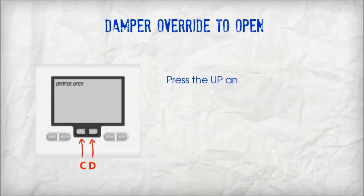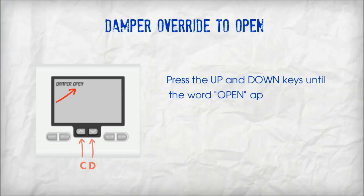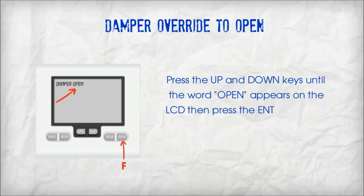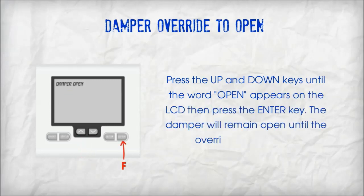Damper override to open. Tap the up and down keys until the word 'open' appears on the LCD, then press the enter key. The damper will remain open until the override is cancelled.